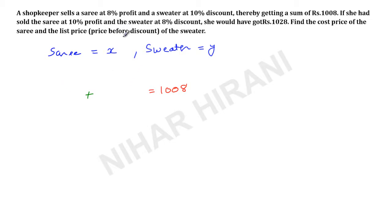Now first of all, this is X for the saree. So when he will sell the saree with 8% profit, it means he will take X price plus 8% profit, so 8% is 8 over 100 times X, 8% of X.